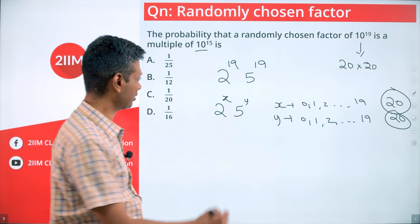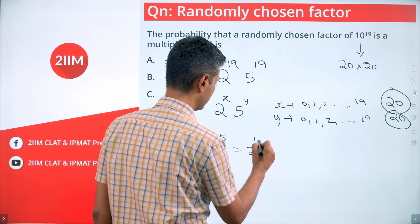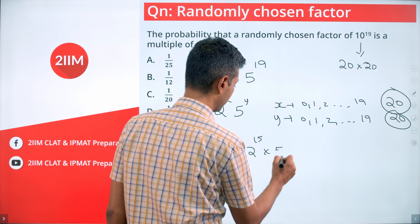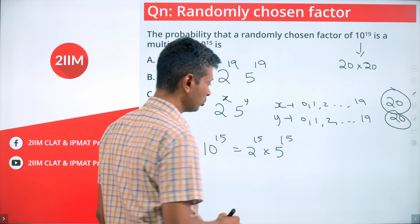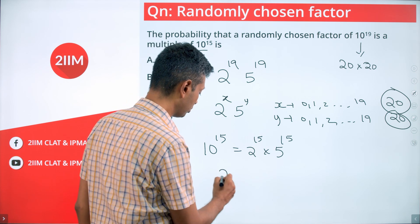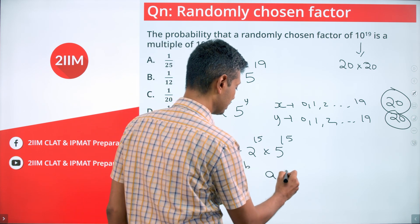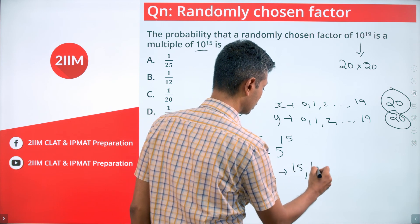10^15 is 2^15 times 5^15. If you want any number to be a multiple of this, it will have to be of the form 2^a times 5^b, where a is 15 or more...